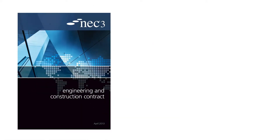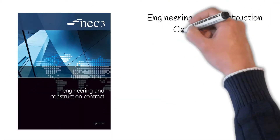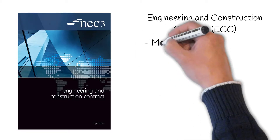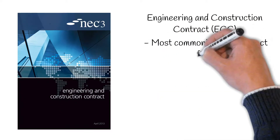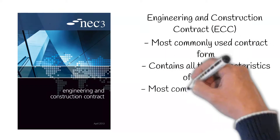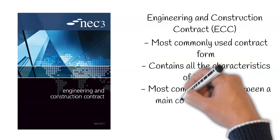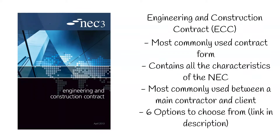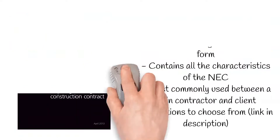The contract forms which fall under the NEC are as follows. Engineering and Construction Contract, or ECC for short. This is the most commonly used contract form and contains all the characteristics of the NEC. This contract is mostly used between a main contractor and a client. Within this contract, there are six options of which the employer would choose what they believe will achieve the best value. If you'd like to know more about these options, there will be a link in the description of this video which goes into them in more detail.